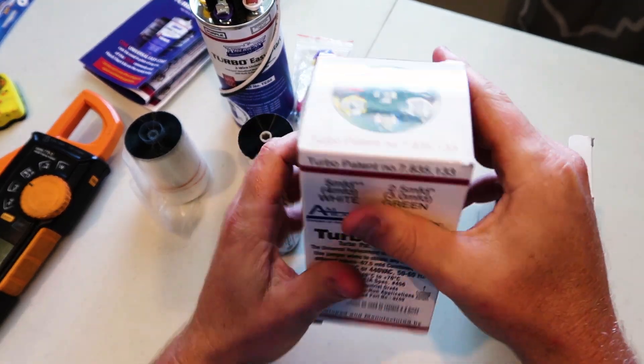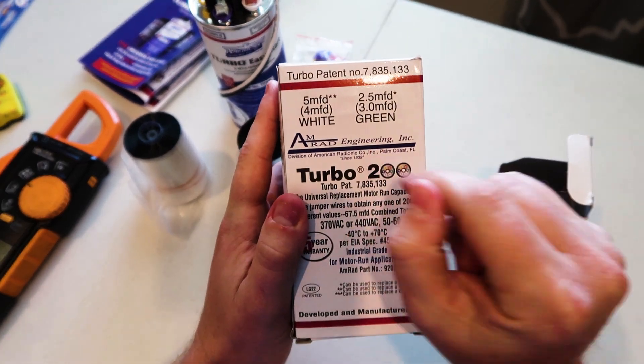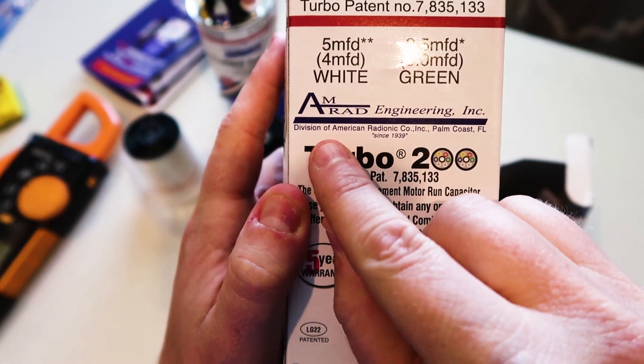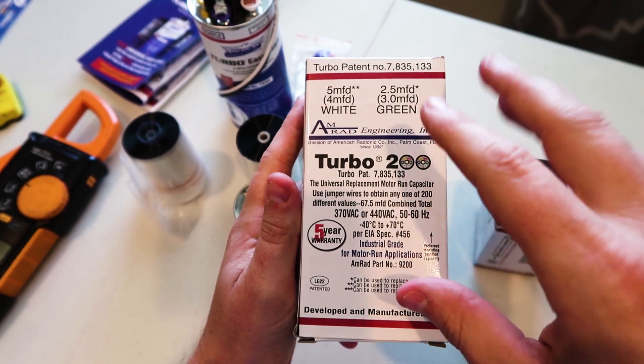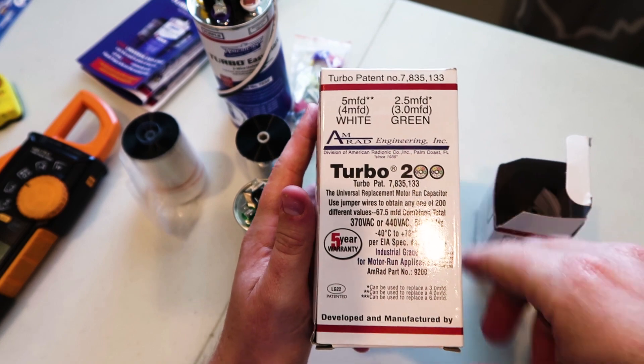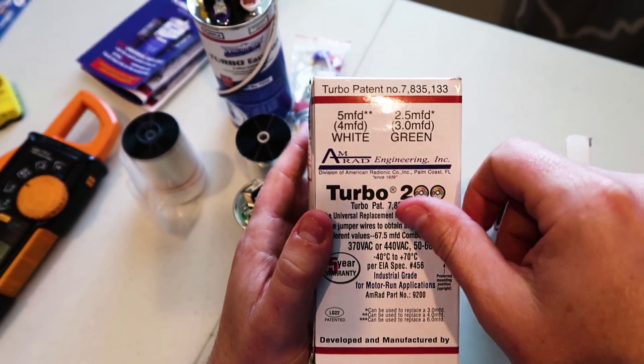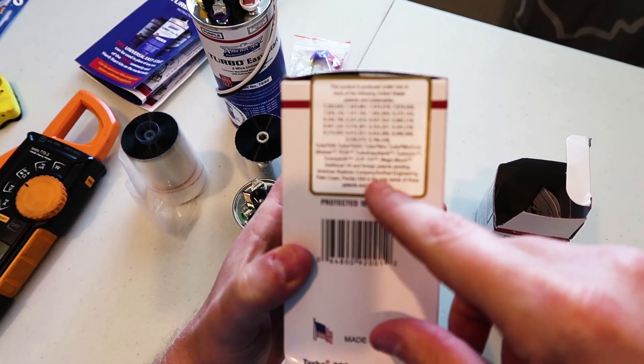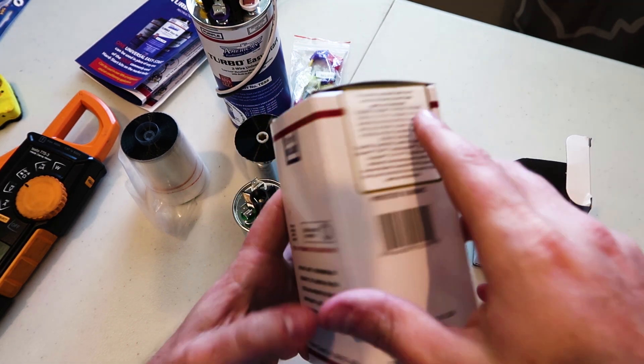I'll talk to you quickly about what makes the Turbo 200 by American Radionics. A lot of you know them as AMRAD Engineering, but it's also American Radionics, a division. You can see AMRAD Engineering is a division of the American Radionics Corp. One nice thing about AMRAD is they put a lot of this information right on the box. One thing is they have many, many patents. A lot of what they make is patented in the U.S. They've done a lot of research and development to make some really unique American-made products.